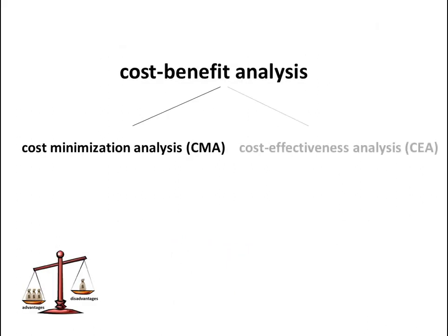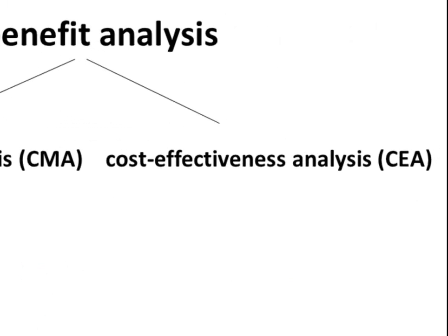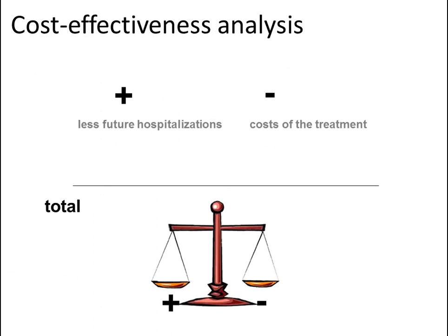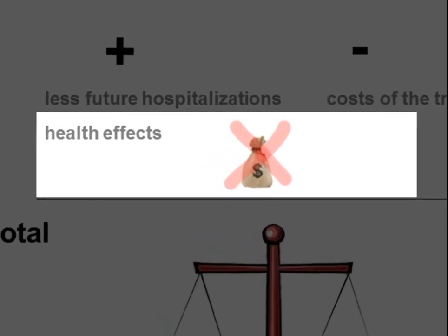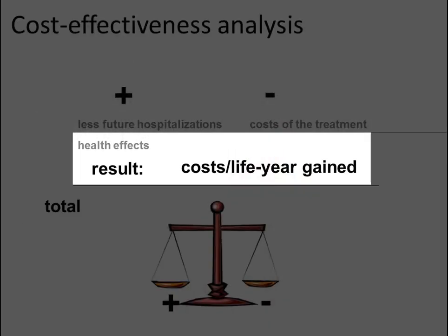Another kind of analysis is the cost-effectiveness analysis. A cost-effectiveness analysis includes both costs and effects. Benefits are now not only savings from lower future disease burden, such as fewer future hospitalisations, but also positive health effects such as increased years of life lived, more pain-free days and so on. A difference from a cost-benefit analysis is that the health effects are not expressed in monetary terms. Instead, they are kept in their unit throughout the analysis and the results are expressed as costs per life year gained, costs per pain-free day, etc.